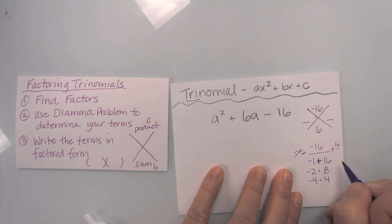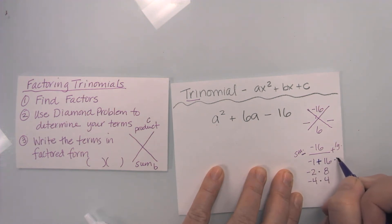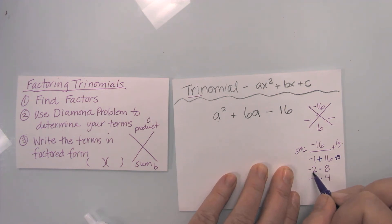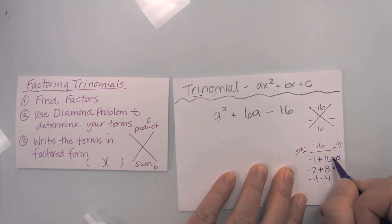Negative one plus 16 is a positive 15. Negative two plus eight equals a six. And a negative four plus a positive four will equal zero.